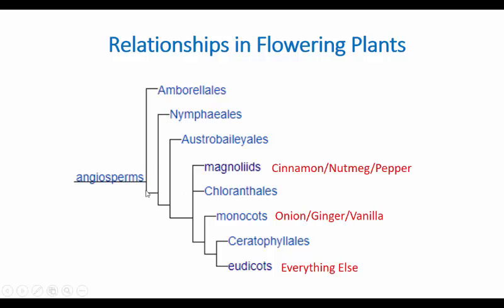Inside the angiosperms — phylum Magnoliophyta, synonymous with all flowering plants — you have dicots and monocots. Don't worry about all the other words you don't know; they're just flagging that there are more groups than I've described. Focus on monocots, dicots (sometimes called eudicots), and magnoliids. Based on this family tree, the dicots are closer to the monocots than either is to the magnoliids.